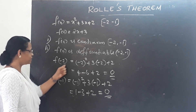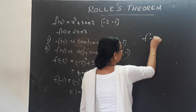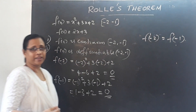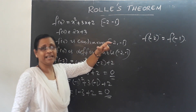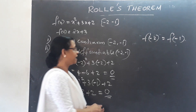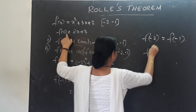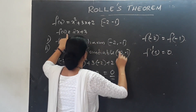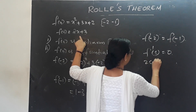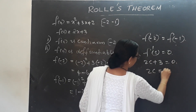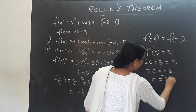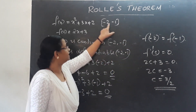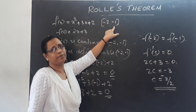The third condition f(−2) = f(−1) is satisfied. So a point C must exist in (−2, −1). Setting F'(C) = 0: 2C + 3 = 0, so 2C = −3, giving C = −3/2. Since −3/2 lies in (−2, −1), Rolle's Theorem is verified.